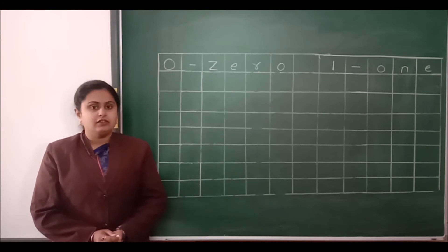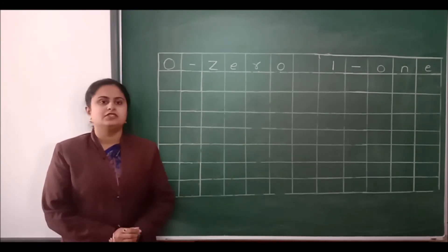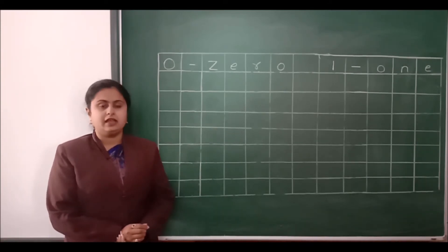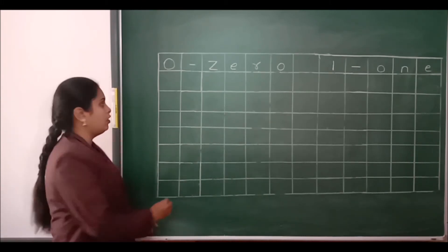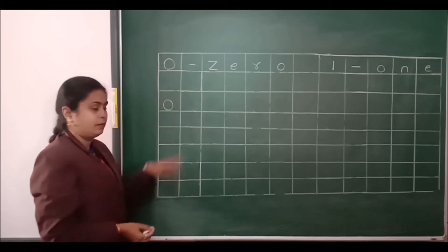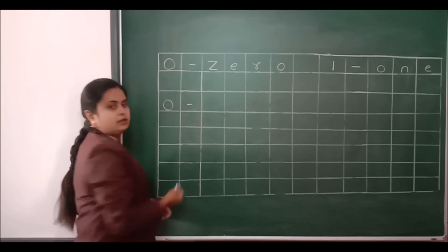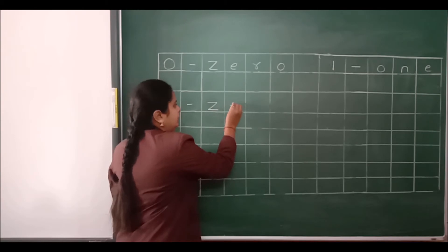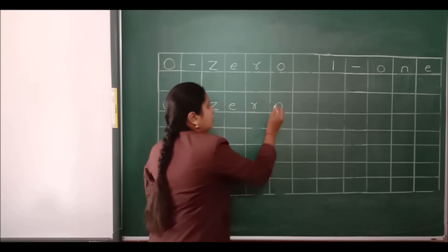Now children, I will show you how you have to write these number names in your copy. Look at the board carefully. See how I am writing, and you also write with me. To write the spelling of 0, first we will write number 0, then one small dash, then Z, E, R, O — zero.